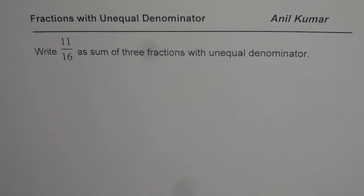Write 11 over 16 as sum of three fractions with unequal denominators. That's a very interesting question. I would like you to pause the video, write down sum of three fractions which should give you 11 over 16 and then look into my suggestion. I'll give you two ways, you could have many ways of doing it, but I'll give you two different ways of writing three fractions whose sum will be 11 over 16 and they all will have unequal denominators.